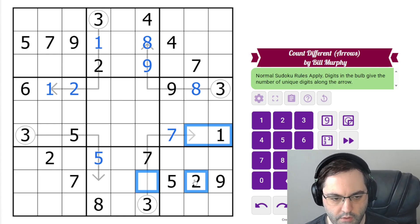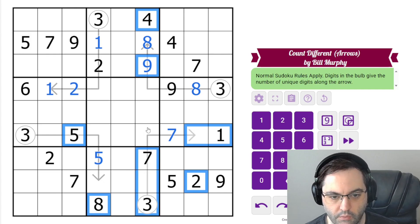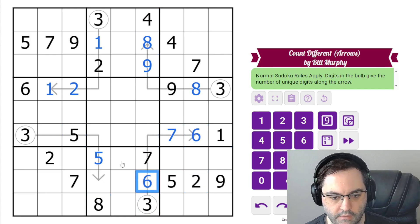These can't be one, two, three, four, five. This time can be six, but not seven, eight, or nine. So six in these.